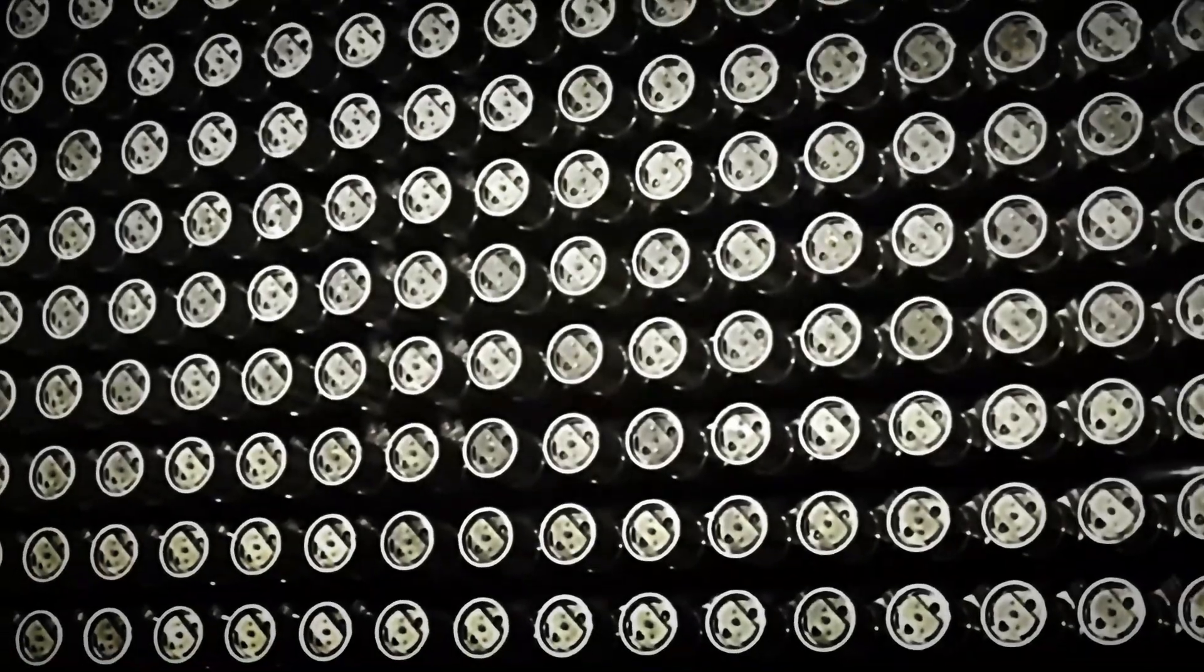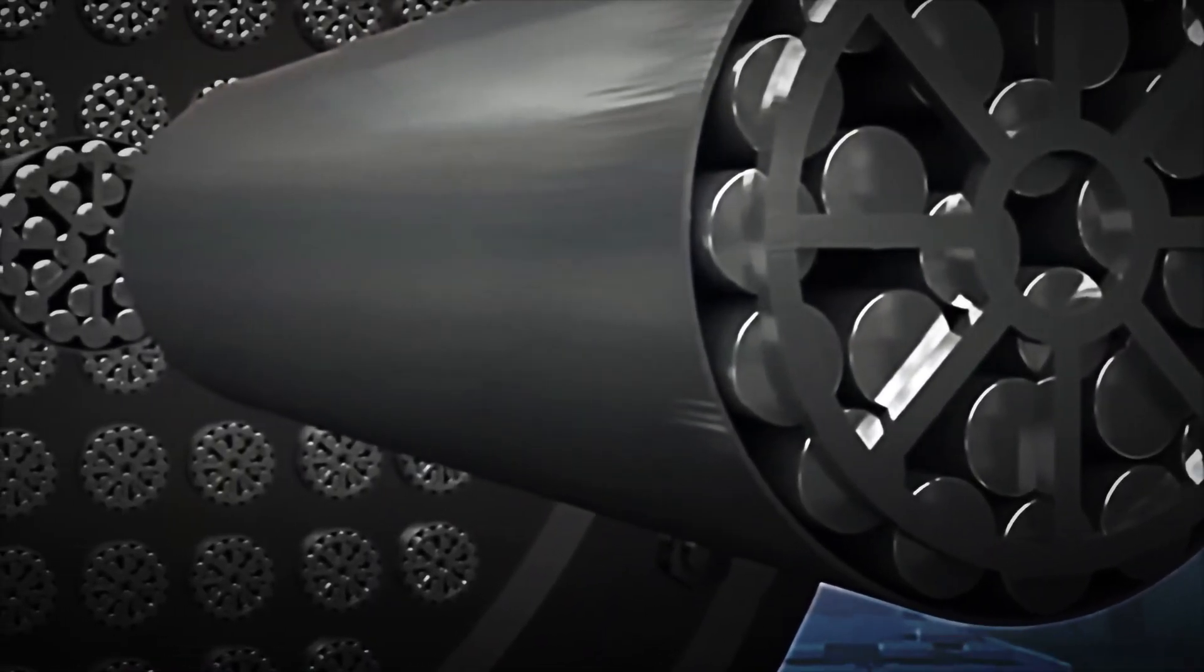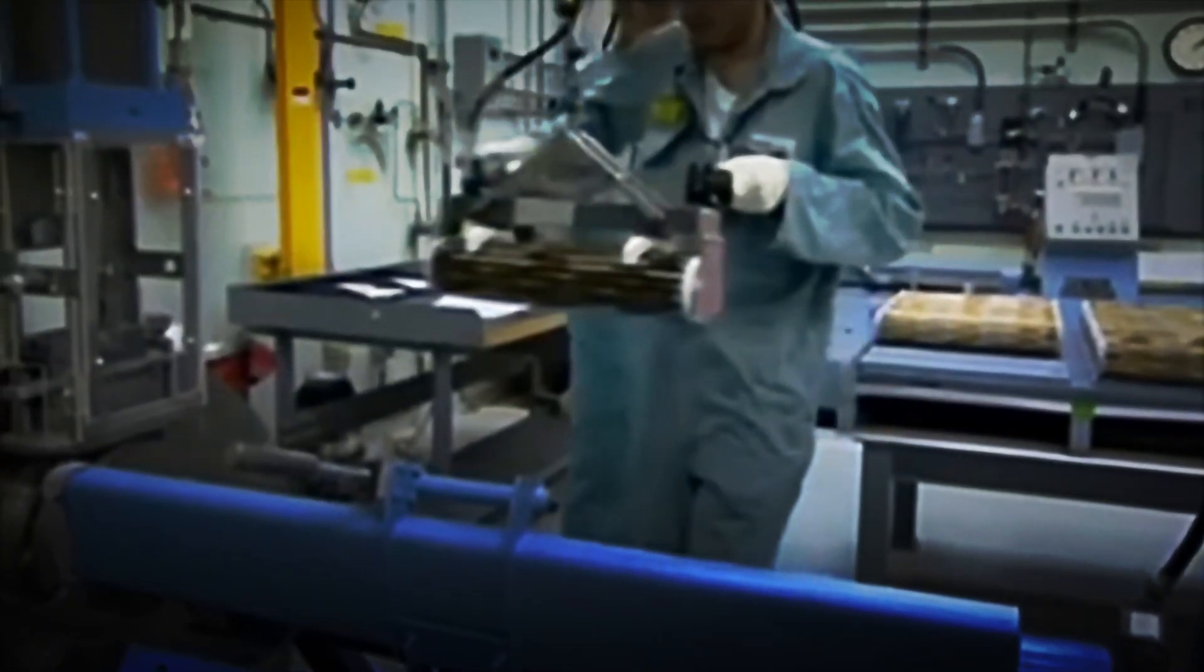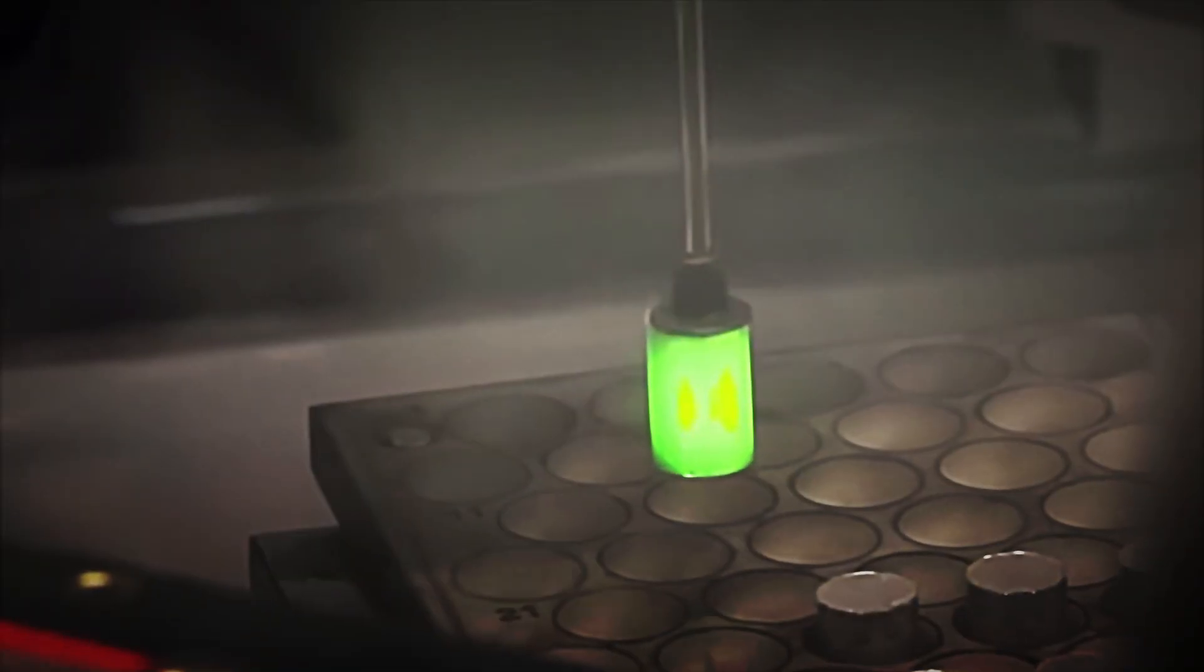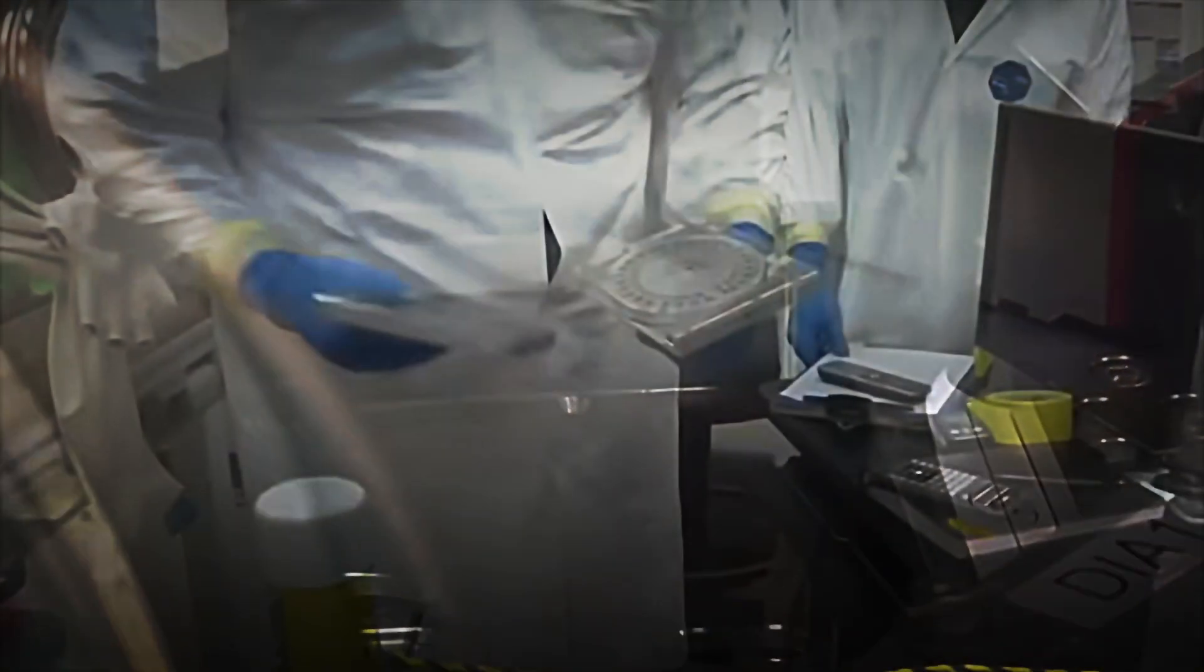Before any plutonium capsule can be used, it must pass a rigorous set of tests. High-resolution X-rays are taken to detect invisible cracks, weights are measured with microscopic margins of error, and they are subjected to vibrations equivalent to those of an actual space launch. Purity is also chemically analyzed to ensure it exceeds 99.9%. Only after passing each of these tests is the material considered suitable for storage and eventual use on a space mission.